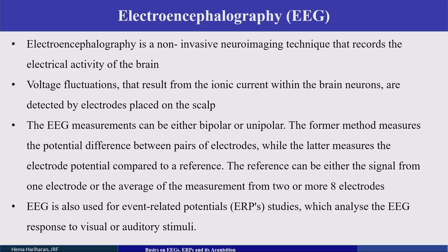EEG measurements can be bipolar or unipolar. In the bipolar method, the potential difference measured is between a pair of electrodes. In the unipolar method, the electrode potential is measured compared to a reference. Any EEG recording will have an active electrode, a ground, and a reference.